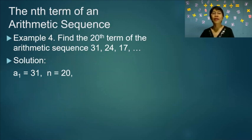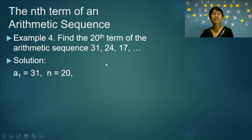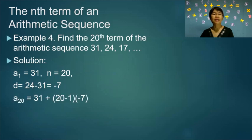Example 4: Find the 20th term of the arithmetic sequence 31, 24, 17. The first term is 31 and the values are decreasing, so we expect a negative common difference. We get 24 minus 31 equals negative 7. The 20th term is 31 plus (20 minus 1) times negative 7, which equals negative 102.